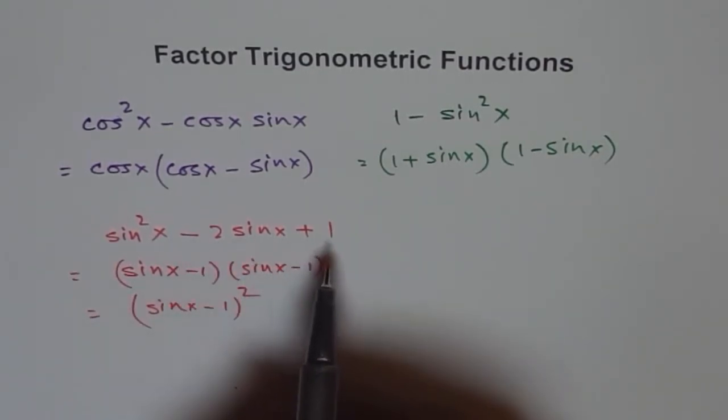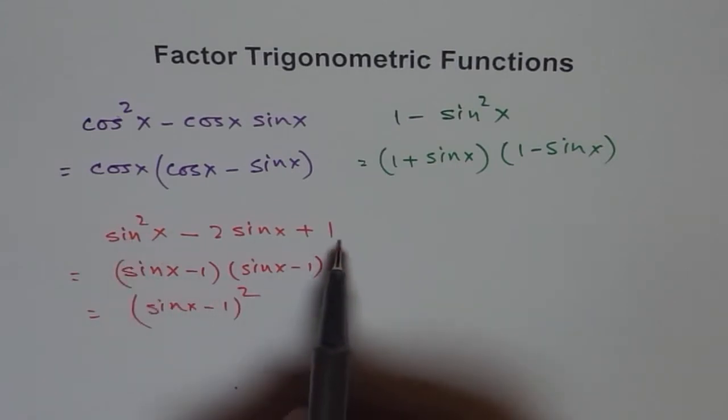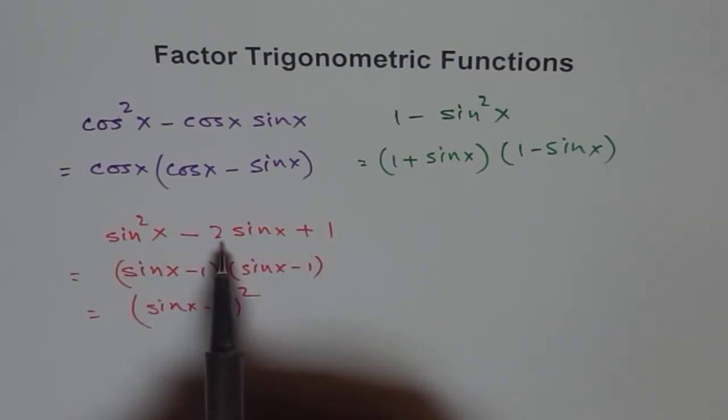You could also see it was a perfect square because this is a² and this is b² and the center term is 2ab.